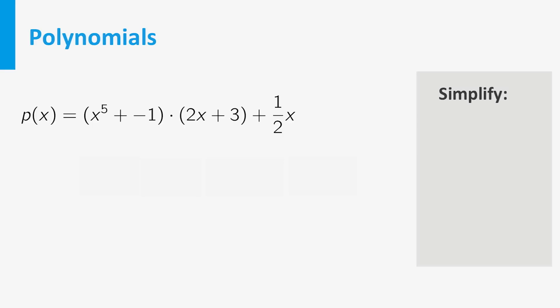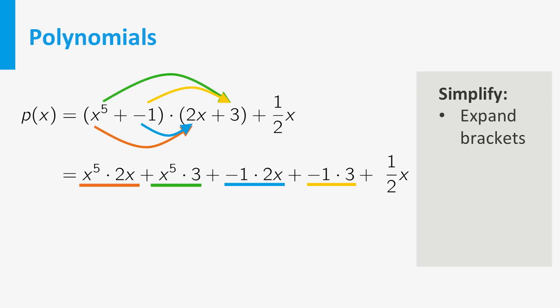First, get rid of the brackets by expanding the product. Remember how to do this. You take all possible products of terms in the first factor with the terms in the second factor, and then add those products. So in this case you get four terms from the expansion, and the term 1 half times x was already there.